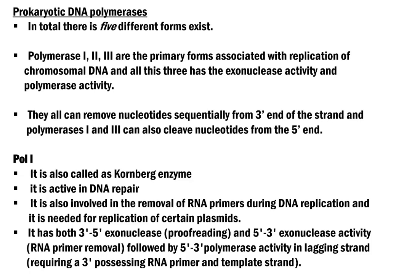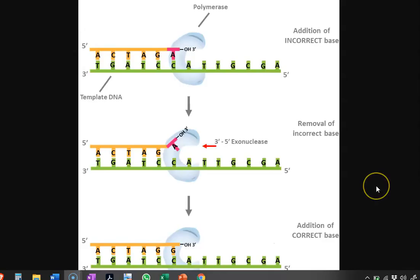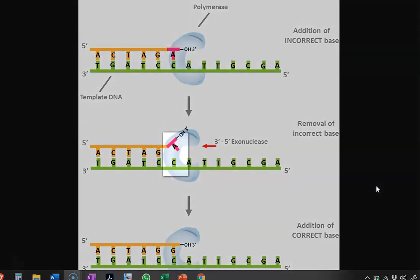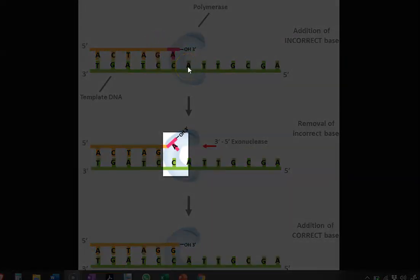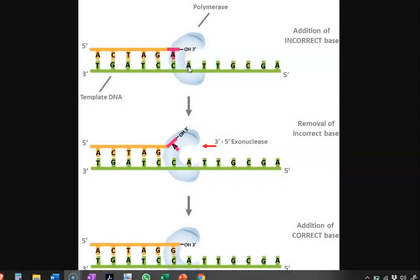All three prokaryotic polymerases have both polymerase and exonuclease activity. The exonuclease activity can be explained using the diagram. The topmost image shows the polymerase activity of DNA polymerase. However, during polymerization, a wrong base has been added — for a C on the template, instead of G, an A has been incorporated.